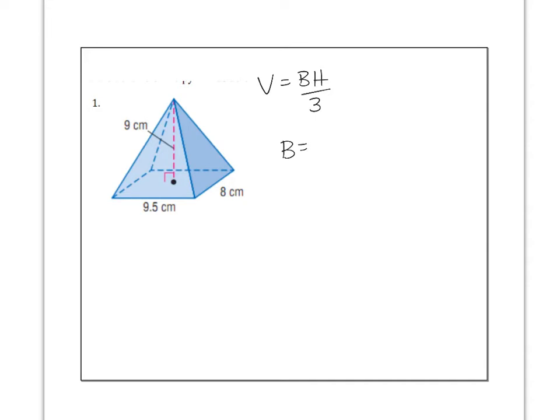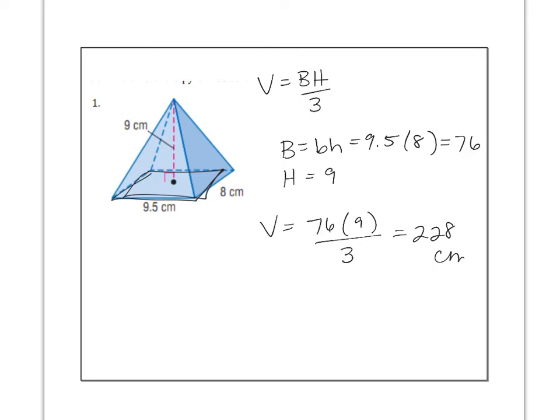Volume of a pyramid is area of the base times the height of the object divide by three. Area of the base, well, this is a rectangle. So it's going to be base times height. And when we think about just the base down here, it's going to be 9.5 by 8. So multiply 9.5 by 8 and you get 76. And then the height of the object is given to us. It is the 9 centimeters. So volume would be 76 times 9 divide by 3. And that comes out to be 228. And remember, for volumes, it's going to be units cubed. So this is centimeters cubed.